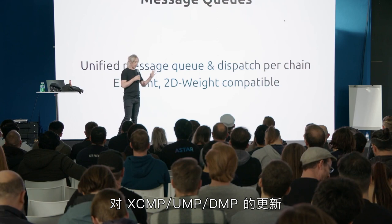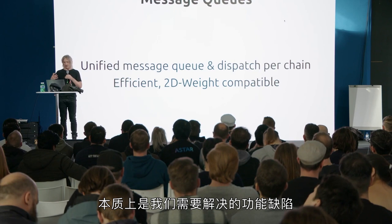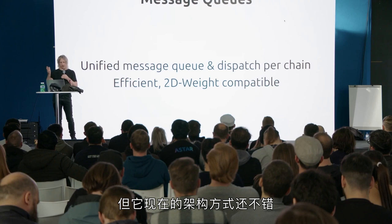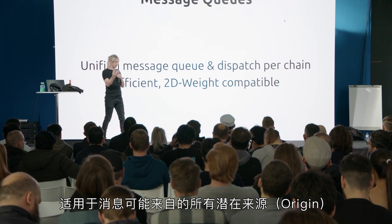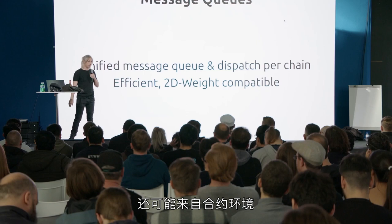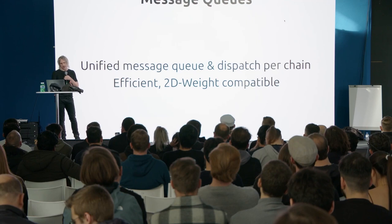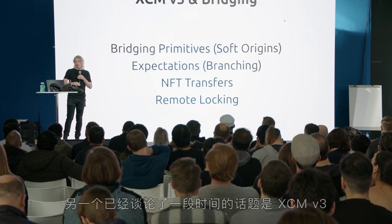Message queues are an update to XCMP, UMP, and DMP — effectively needed because of the 2D weights refactoring. It's a functionality refactor, but it's nicely architected. There's a unified message queue that works for all potential origins that messages can come from, whether from another parachain, the relay chain, the local parachain itself, or the contract environment. They all go into the same queue, with a nice round-robin system for quality of service guarantees, and it's 2D weight compatible.